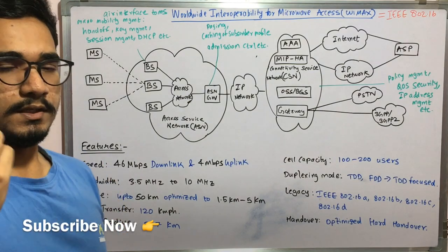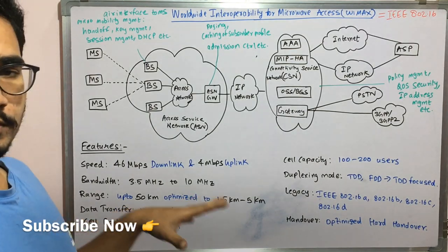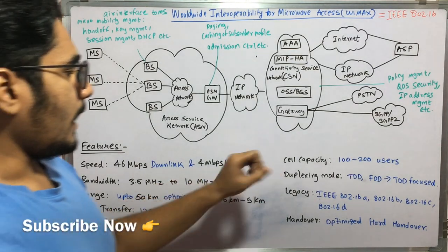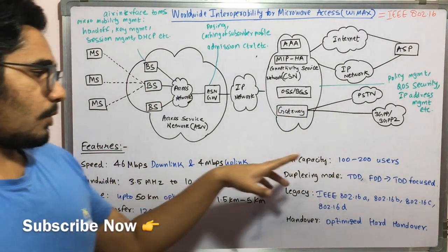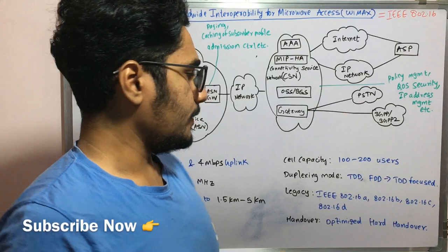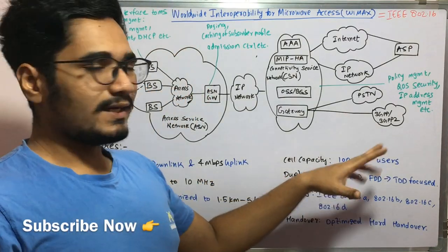Then the cell radius, the cell which you see in the core channel interference, the d and the r parameters, that cell radius at r is about 2 to 7 kilometers in this. And then you have the cell capacity, means the entire cell in which WiMAX system operates, it can support up to 100 to 200 users per cell. And the duplexing mode used in this is either TDD or FDD but it's mainly focused on TDD technology that is time division duplexing.